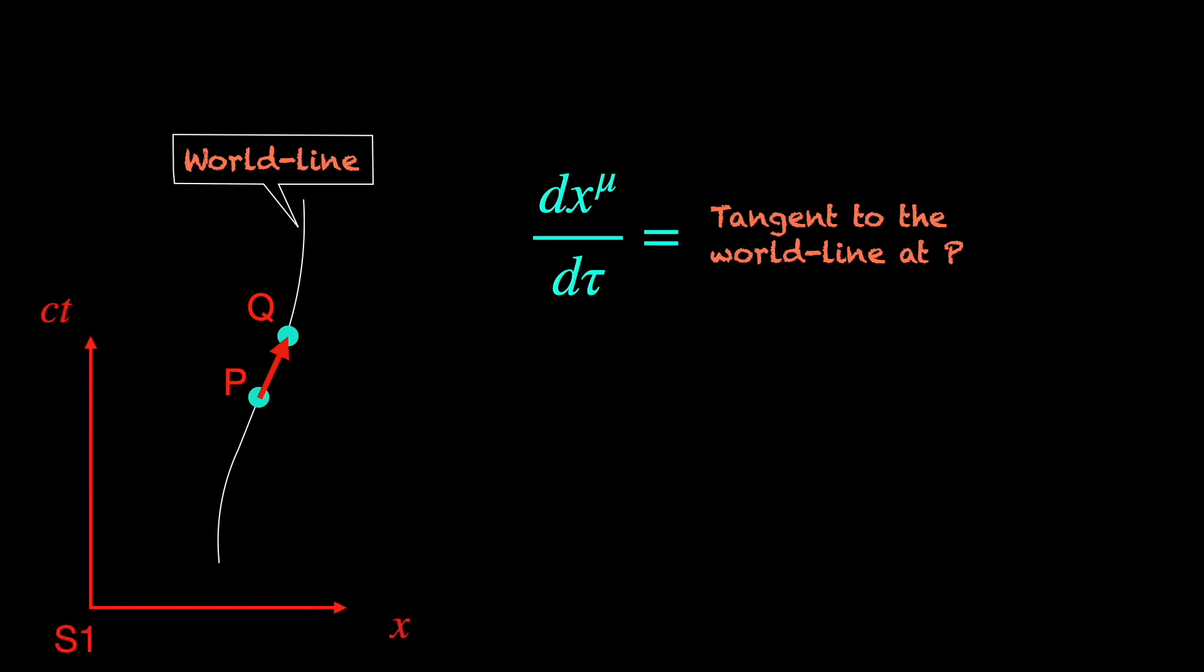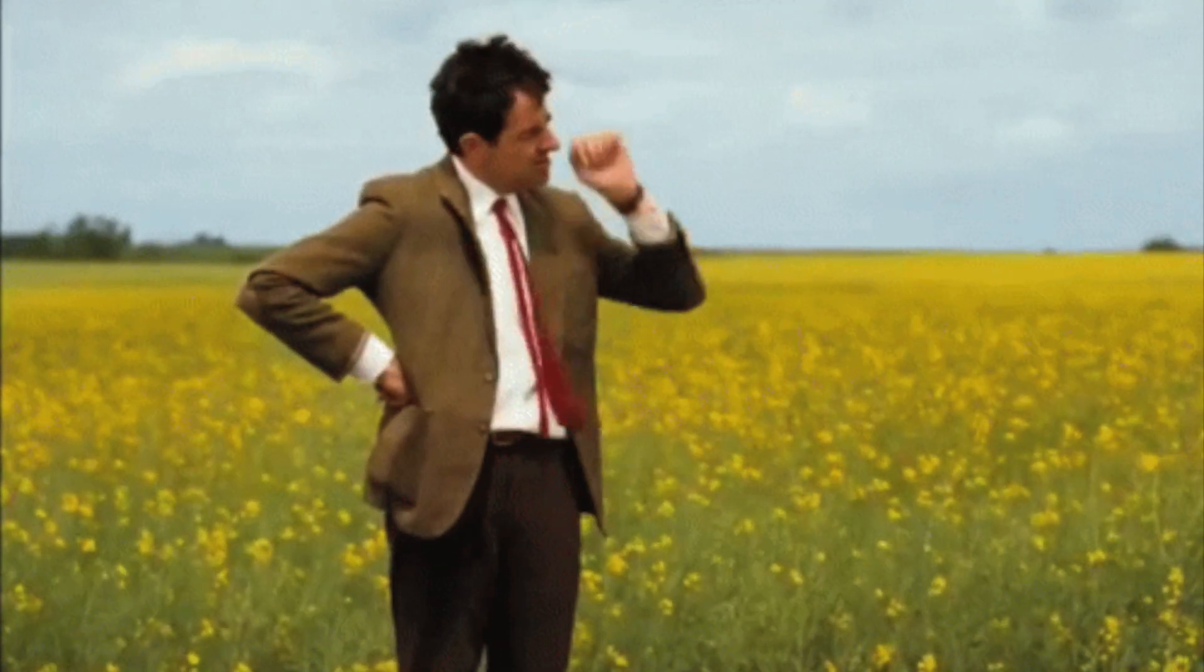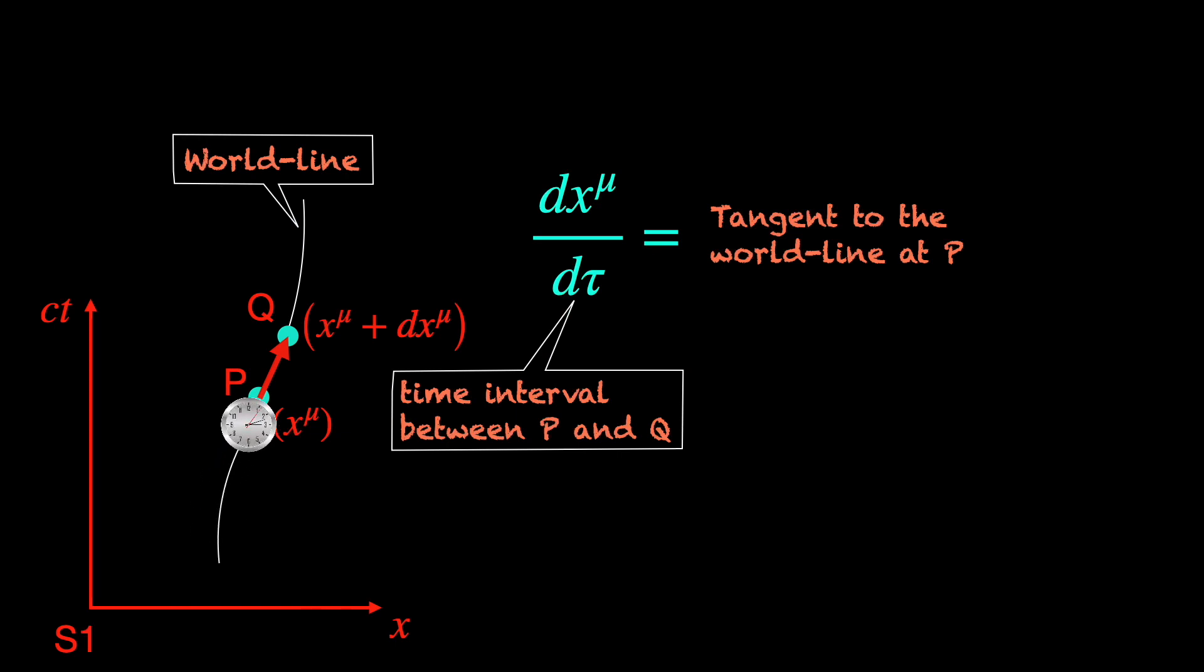dx mu here is obviously the space-time coordinate differential between events P and Q. We have already discussed this. d tau is the time interval between events P and Q, but not the one shown by the observer's clock i.e. our clock. Rather, it is shown by a clock attached to that massive particle, formally known as the proper time interval.